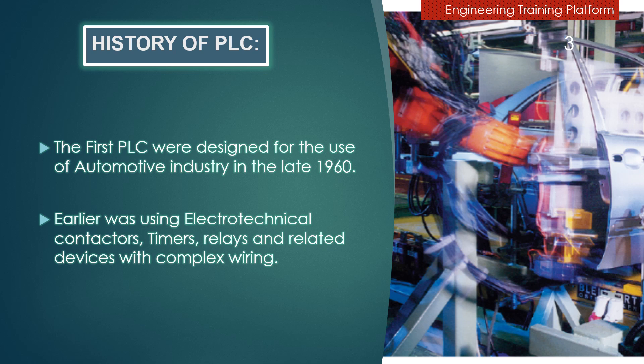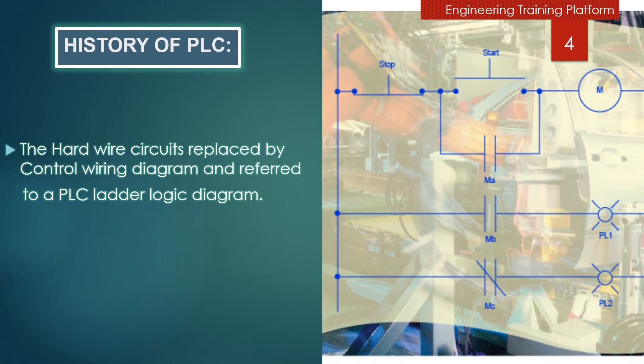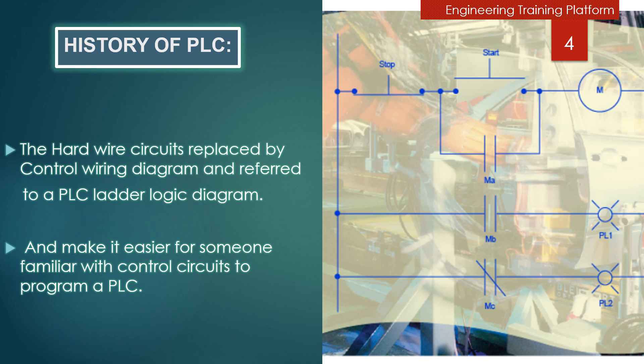Additionally, manufacturing processes were becoming more complicated and more relay circuits were required. The hardwired circuits were replaced by control wiring diagrams and referred to as PLC ladder logic diagrams, as you can see in the picture on your right. This made it easier for someone familiar with control circuits to program a PLC.